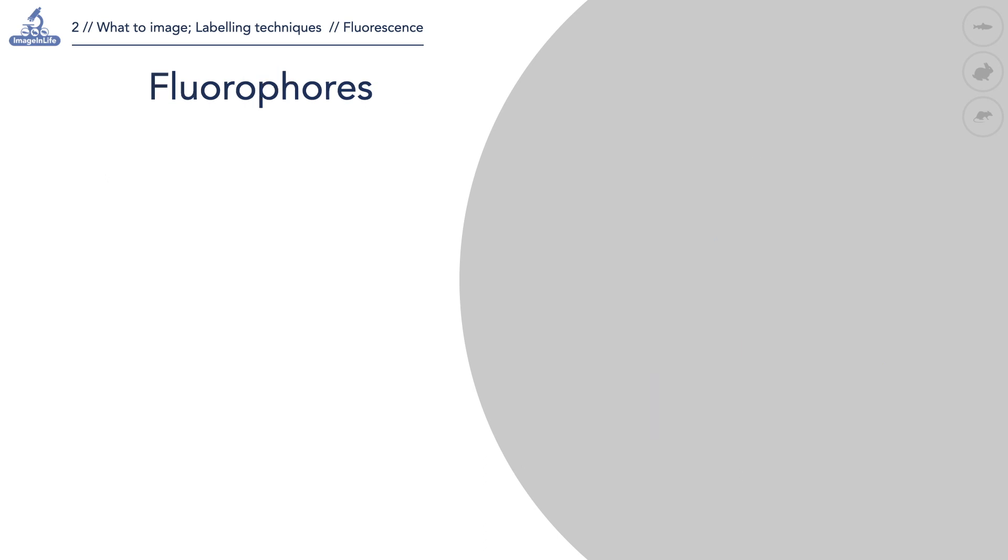We name fluorophores molecules that have the ability to absorb and emit photons. We distinguish here two classes of fluorophores used in biological experiments: chemical dyes and genetically encoded fluorophores.